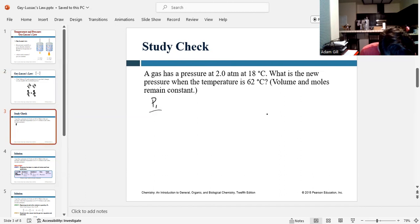So pressure one over temperature one equals pressure two over temperature two. And they're asking us what is the new pressure? So we're trying to get P2 by itself here. So if I multiply both sides of the equation by T2, that eliminates it from that side of the equation. So we've got P2 all by itself here, and it's equal to T2 times P1 over T1.